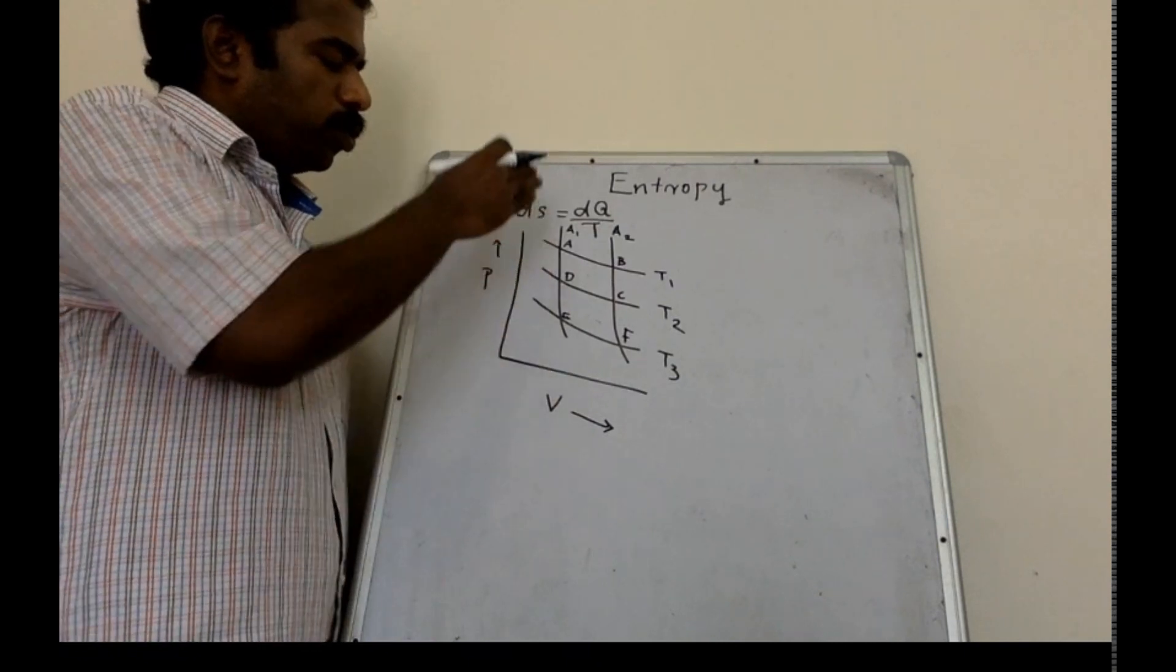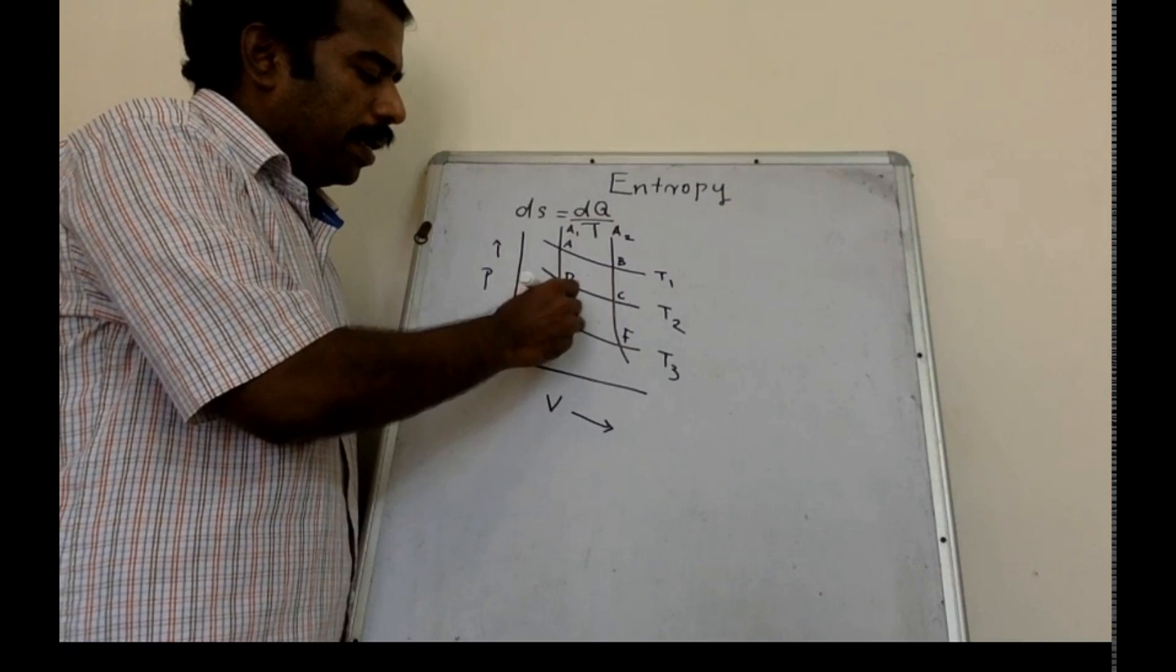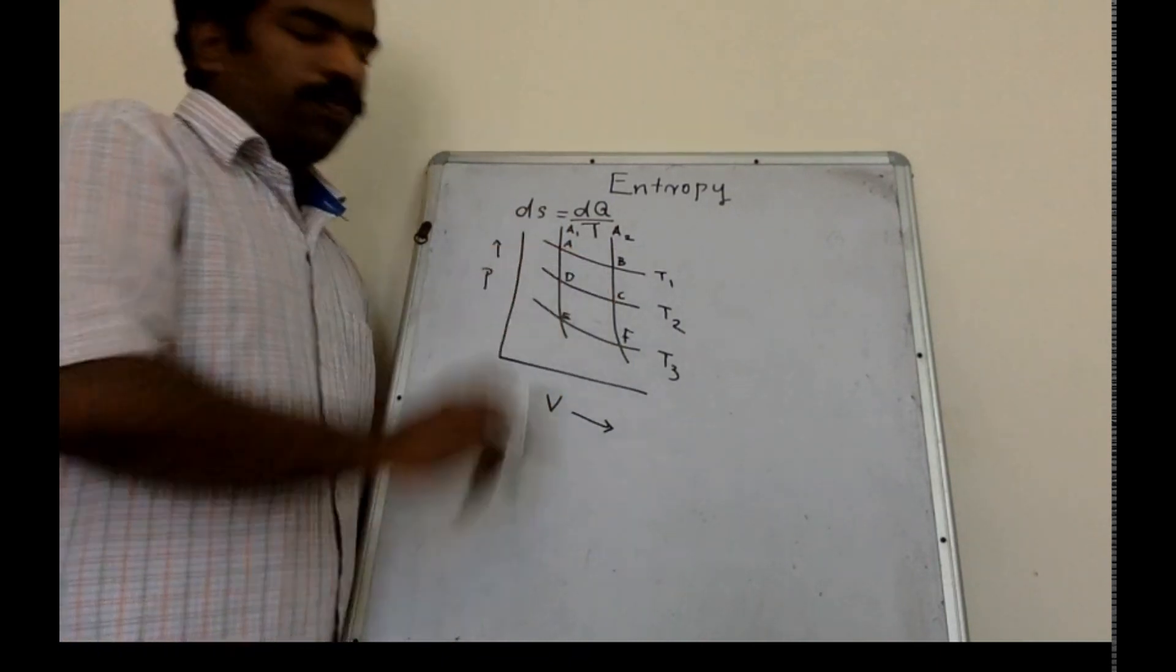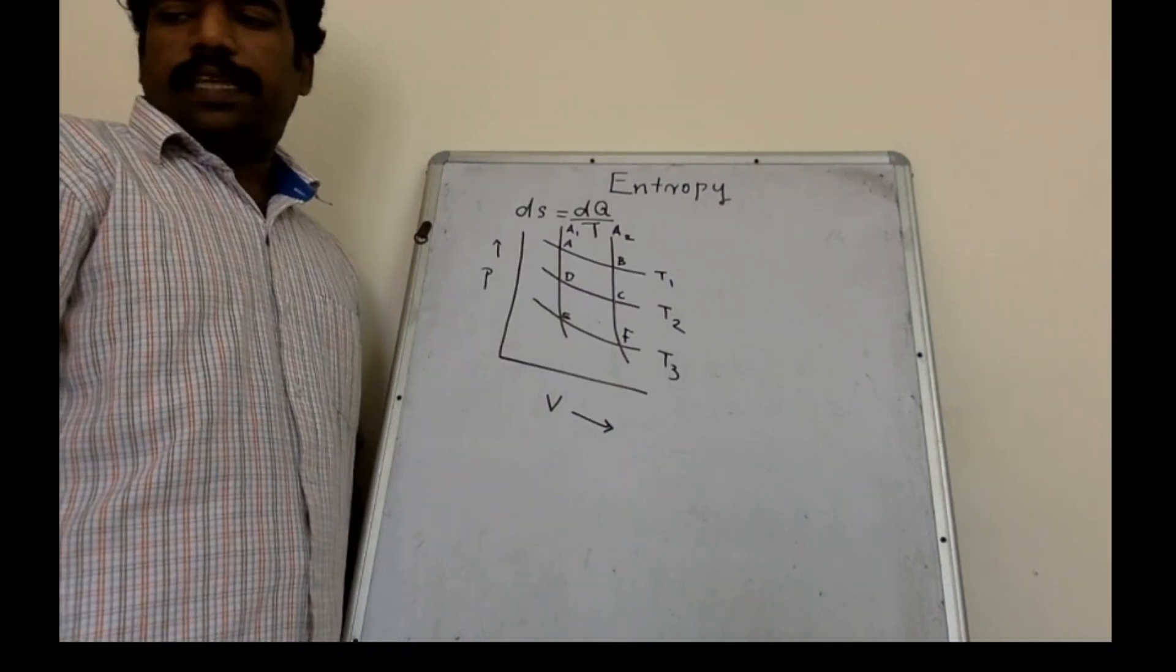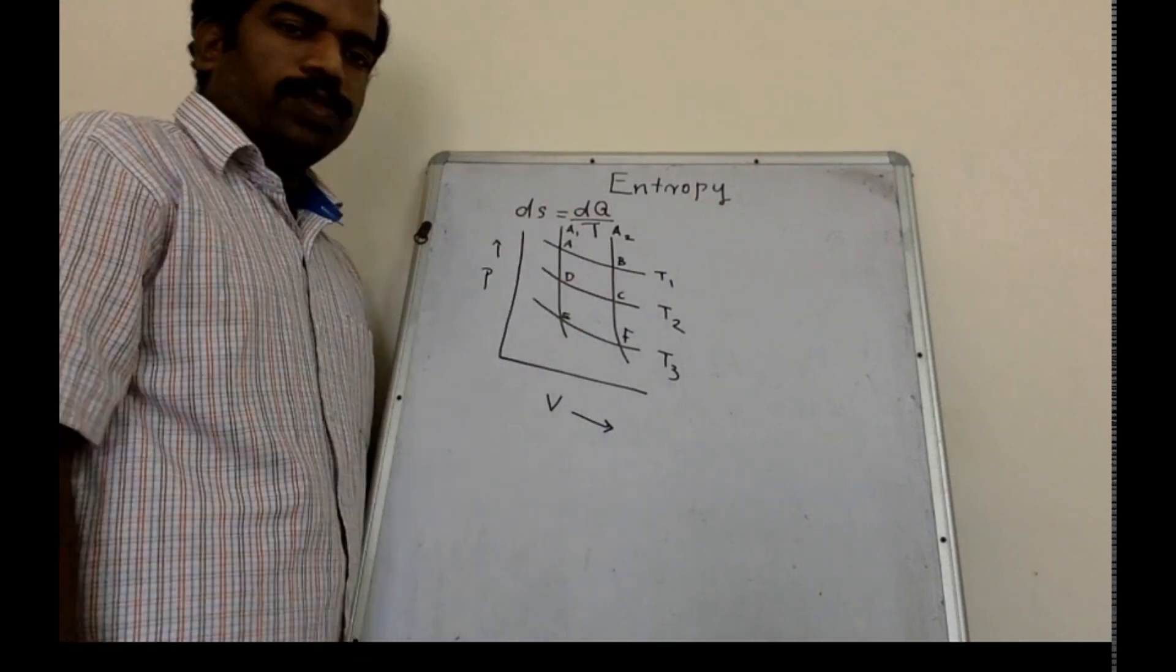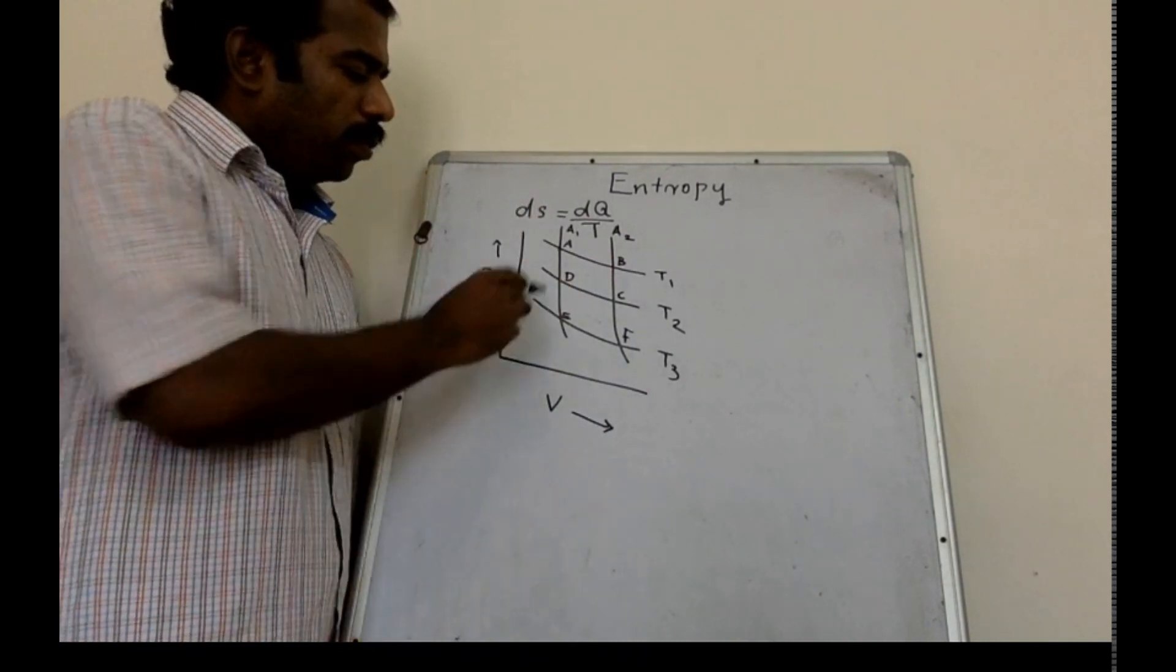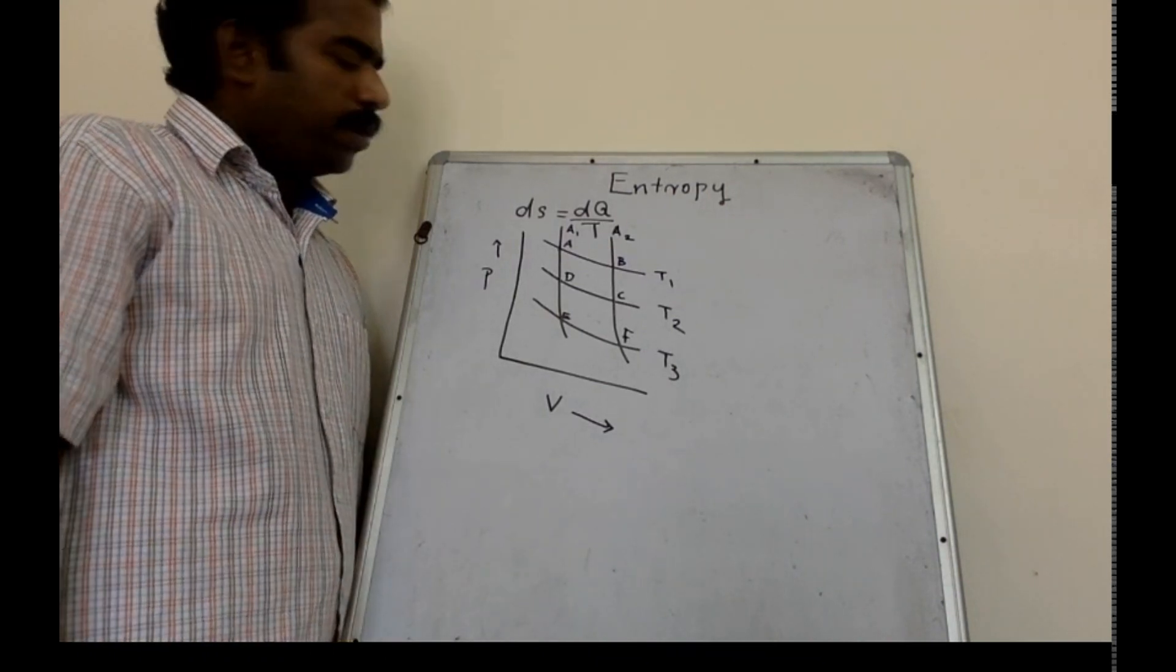The adiabatics intersect the isothermals at A, B, C, D, E, and F. All these boxes represent Carnot's reversible cycles. ABCD is a Carnot's reversible cycle with isothermal expansion, adiabatic expansion, isothermal compression, and adiabatic compression. Also, DCEF is another Carnot's reversible cycle.